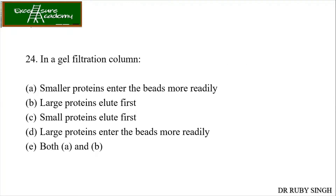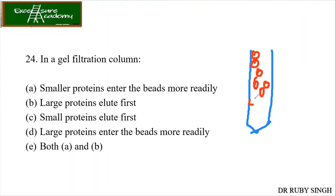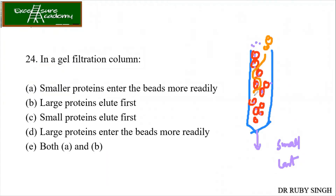In gel filtration columns, smaller proteins enter the beads more readily — yes, that is true. Larger proteins do not enter the beads; they are present in the outer space. Let me show you with a diagram. In the gel filtration column, matrix beads are there. Smaller proteins will enter the beads, taking more time and more elution volume to come out — so small proteins come out last. Bigger proteins are present in the spaces between beads and will come out first.